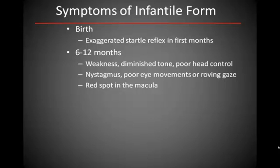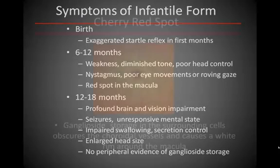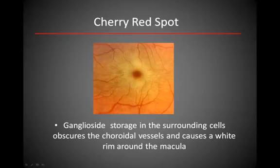Examination of the retina shows a red spot in the macula. By one year of age, all children with the infantile form are severely impaired, many with seizures and impaired swallowing. Head size may be enlarged due to the effects of stored gangliosides. The cherry red spot is a distinctive feature of Tay-Sachs disease, occurring because gangliosides accumulate in the periphery around the macula, which is an area of concentrated retinal cells.